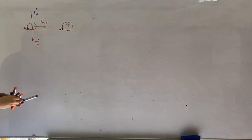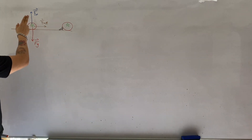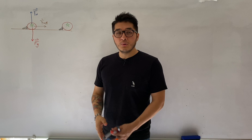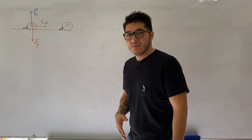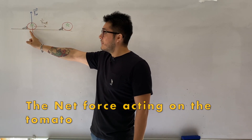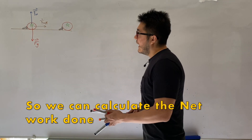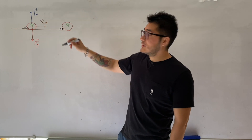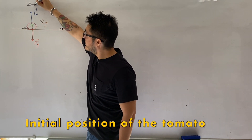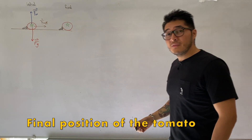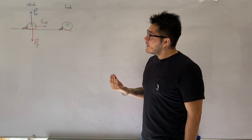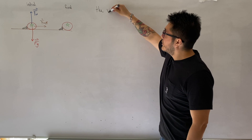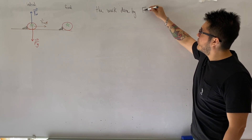What we want to do today is calculate the work done. Notice that before we calculated the work done by each individual force. Now we could do that and then add them up to find the total net work done, but an easier technique is to find the net force acting on the tomato so we can calculate the net work done. A good strategy in this unit is to always identify the initial conditions and the final conditions — that's why we see the tomato twice. We want to find the work done by the net force.